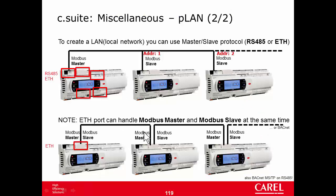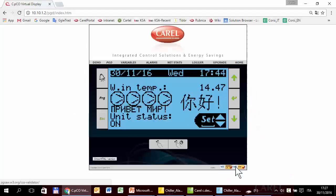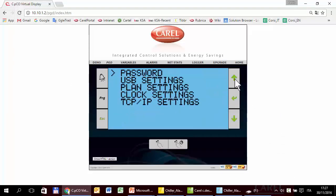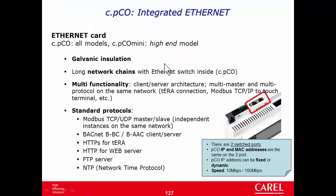An external switch is required for CPico Mini. The IP can be fixed or dynamic, configured in the system menu under TCP/IP settings. The system supports multi-protocol operation, running several protocols simultaneously.